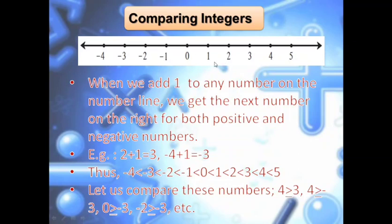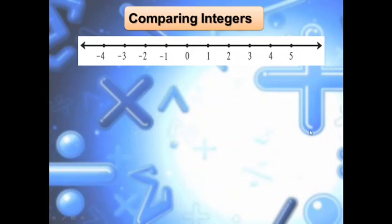When I compare with 0: minus 1 is less than 0, 0 is less than 1, 1 is less than 2, 2 is less than 3, 3 is less than 4, 4 is less than 5. So the biggest number in this number line is 5 and the smallest is minus 4. This is nothing but comparison of integers.